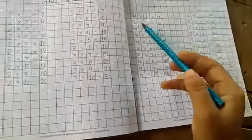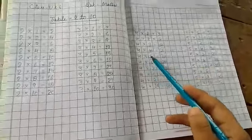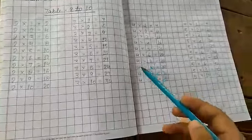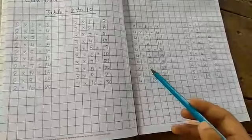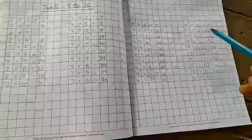4 1's are 4, 4 2's are 8, 4 3's are 12, 4 4's are 16, 4 5's are 20, 4 6's are 24, 4 7's are 28, 4 8's are 32, 4 9's are 36, 4 10's are 40.